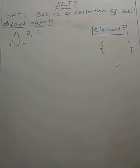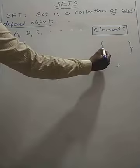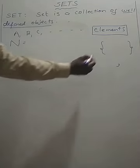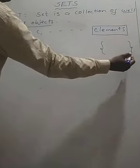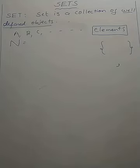To summarize: the objects of the set are called elements, the elements are enclosed by flower brackets, and the elements are separated by commas in between them. Natural numbers are 1, 2, 3, and so on.